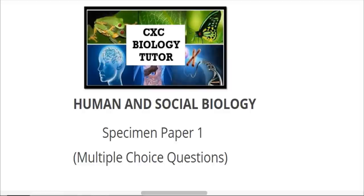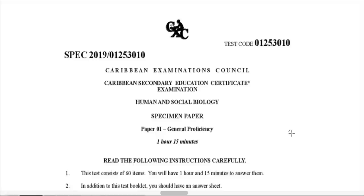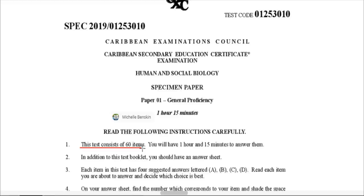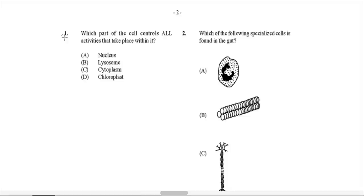Hi, it's Michelle, your CSC Biology Tutor. In this video I'll be looking at the Human and Social Biology Specimen Paper 1. This is the paper that consists of the multiple choice questions. The duration of the paper is 1 hour and 15 minutes and it consists of 60 items — 60 questions to answer in that 1 hour and 15 minutes. Okay, let's begin.